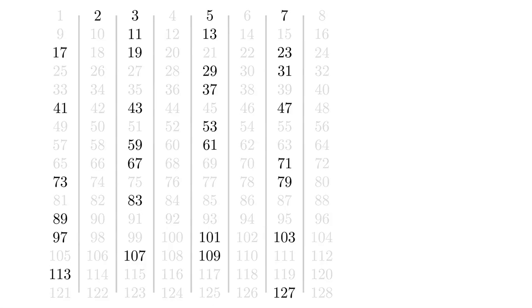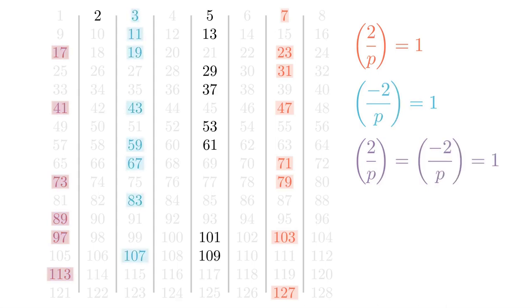Now let's just take a look at the primes. Here are just the primes. And here in red, I'm going to highlight the primes for which (2/p) = 1. And then here in blue, I'll highlight the primes for which (-2/p) = 1.